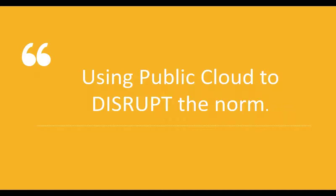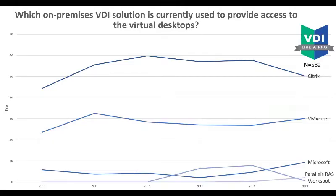Public cloud services are disrupting the norm — we'll talk about that more later. One of the hot topics: what on-premises VDI solution do you currently use? You can see Citrix declining, VMware increasing, Microsoft increasing, Workspot declining, Parallels small but slowly growing — which says something about what's happening in this space, both on-premises and as a service.